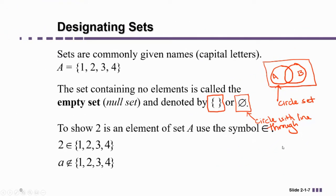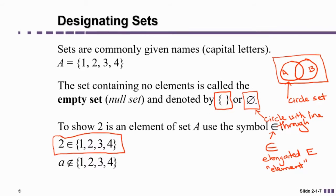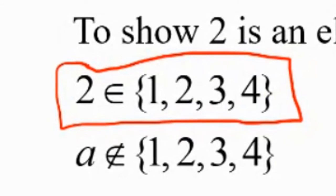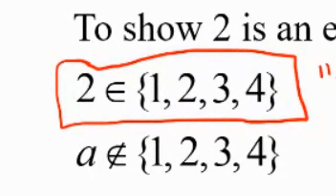Another symbol that we're going to be using is this elongated E symbol here. And the reason why we use an E is because we are talking about elements of the set. E for elements. So for example, this notation here, 2 is an element of the set {1, 2, 3, 4}. That's how you would read that.